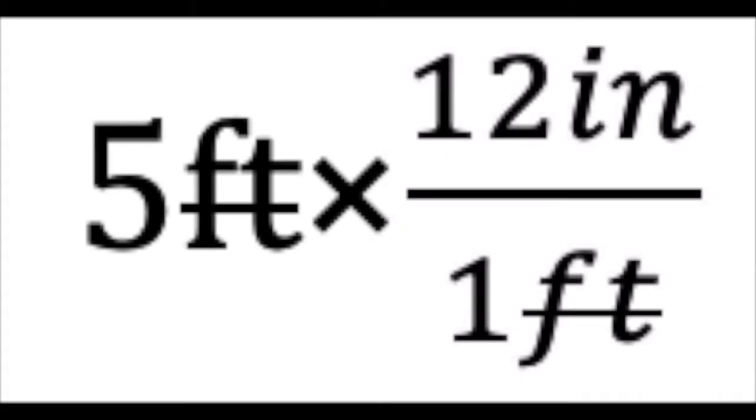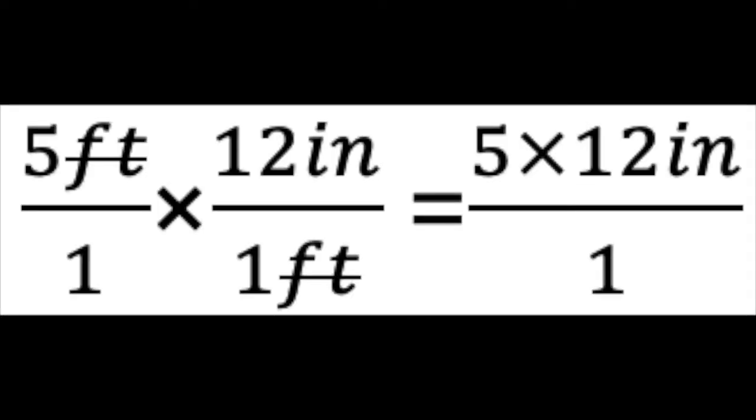This lets the feet cancel because anything that appears on the top and the bottom cancels. And then let me just write the five feet as five feet over one. And you can see that when I multiply out the fractions, I get five times 12 inches at the top because the inches haven't canceled. And one times one gives me one at the bottom.